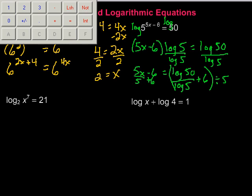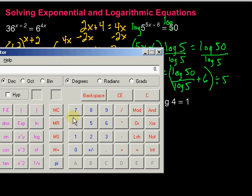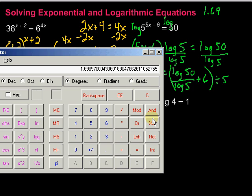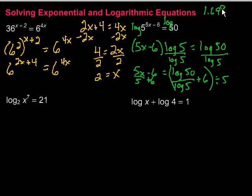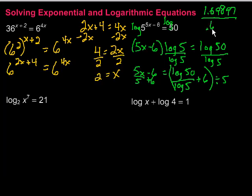I need to grab my calculator to figure out those logs. The log of 50 over the log of 5 — those aren't nice logs, so I have to use my calculator. The log of 50 is 1.69897, and the log of 5 is 0.69897.